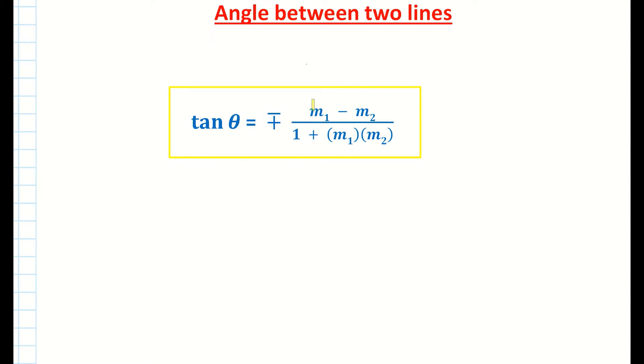So you're using two slopes. You're using M1 and M2. M being the letter to stand for slope. And you have M1 and M2 standing for slope 1 and slope 2. So let's have a look at an example.